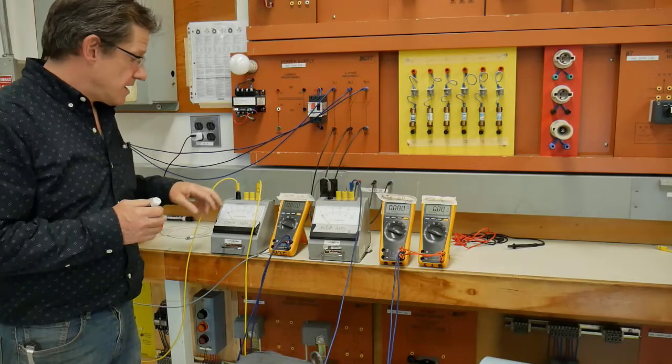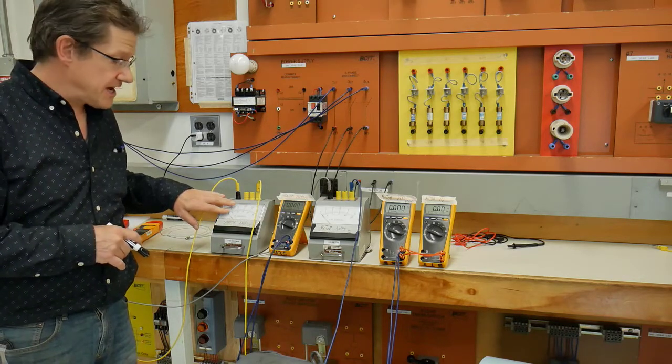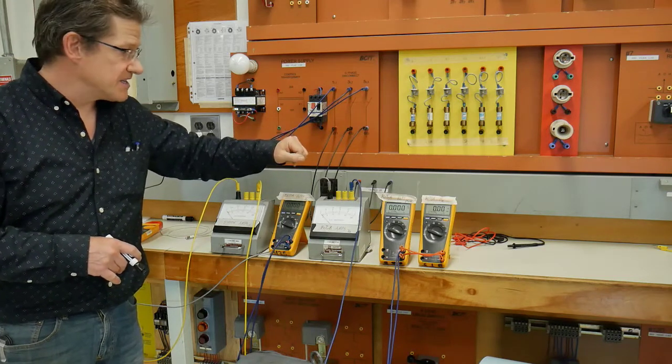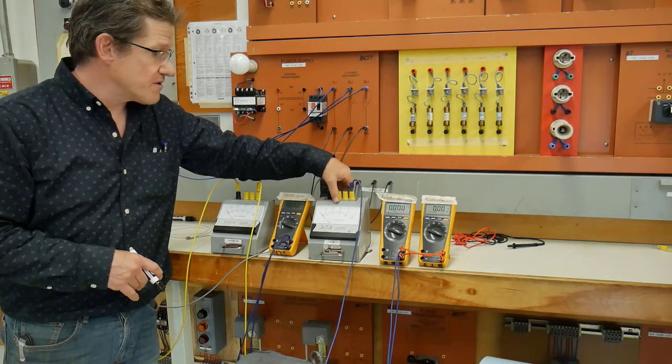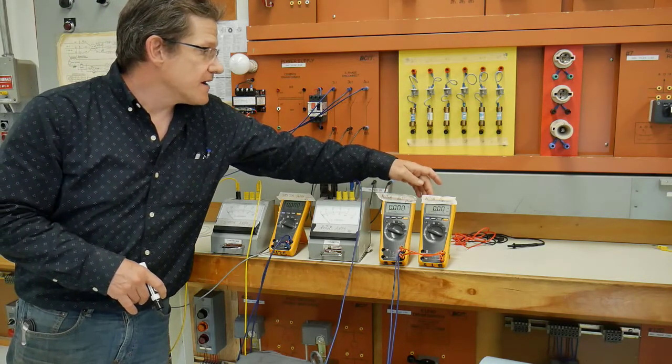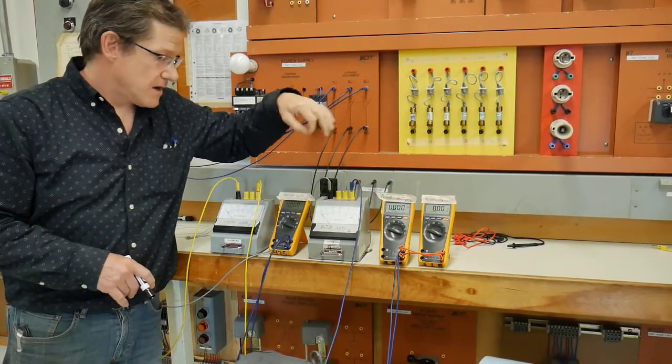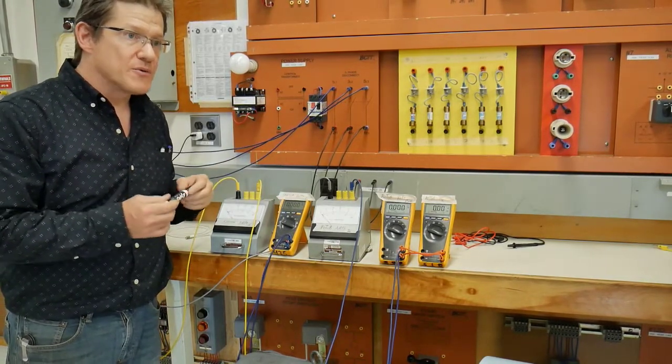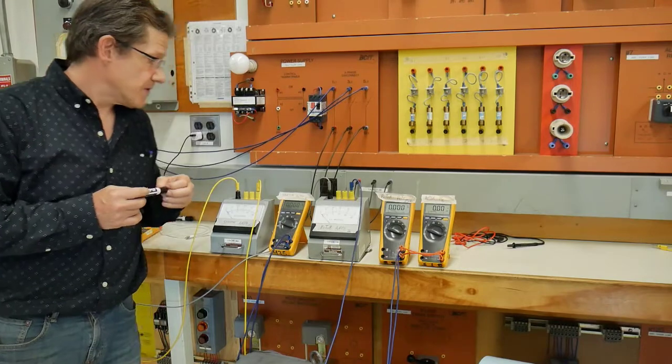Here are our meters all set up. We have an ammeter in series with the stator lines, a voltmeter for stator volts, an ammeter in series with the rotor circuit, and we'll be monitoring rotor volts and rotor frequency. We're going to start the motor with the rotor circuit not connected, so I don't expect any revolution of the rotor yet.